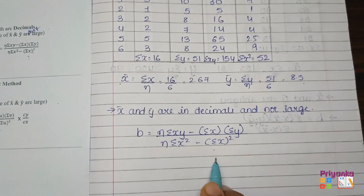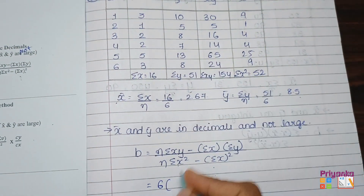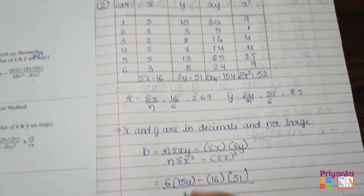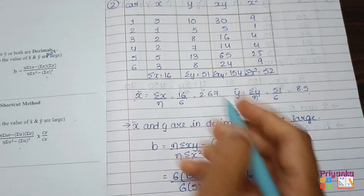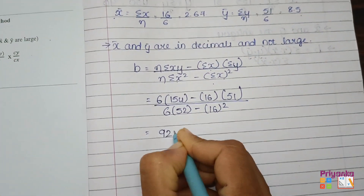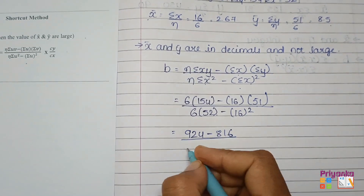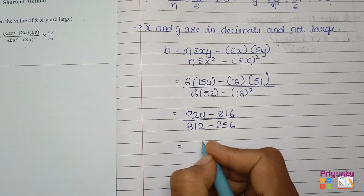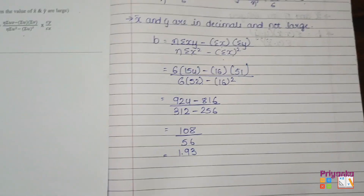Now we have all the information needed for the formula. With n=6 total cars: b = (n·σxy − σx·σy) / (n·σx² − (σx)²) = (6×154 − 16×51) / (6×52 − 16²) = (924 − 816) / (312 − 256) = 108 / 56 = 1.93.